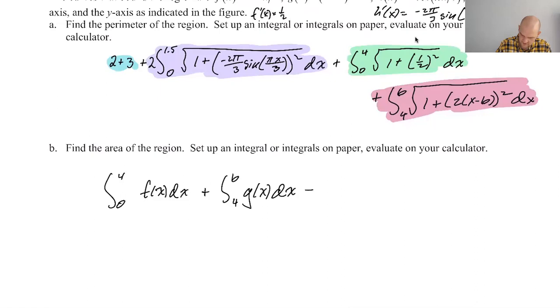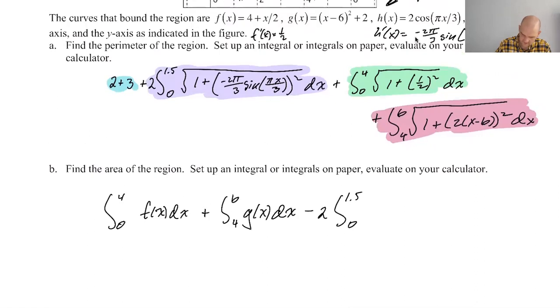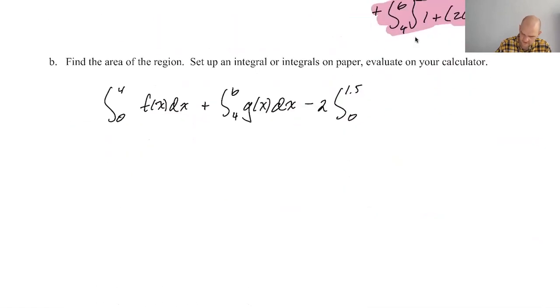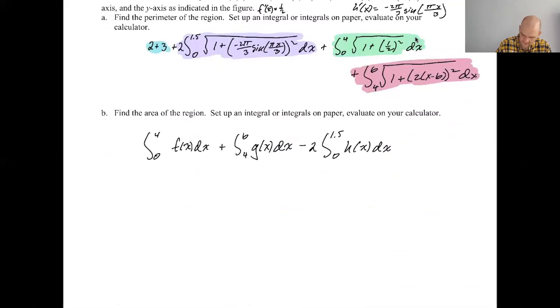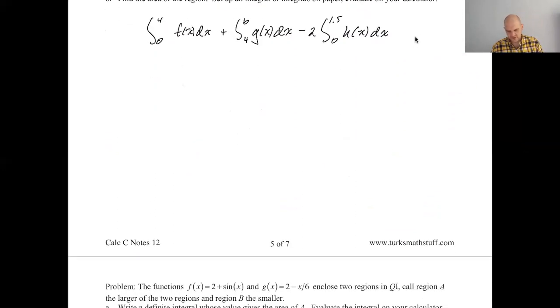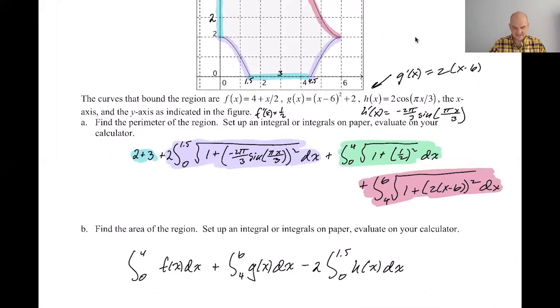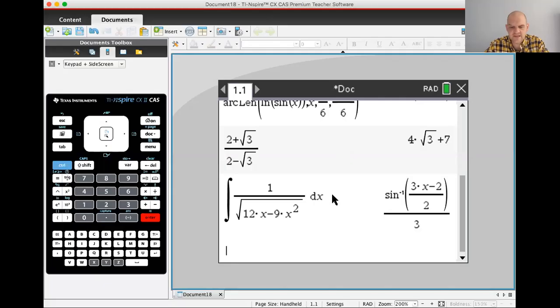And then I'm going to subtract two times the integral from zero to 1.5 of probably H of X. Yes. So zero to 1.5 and then two of them, H of X DX. All right. I don't know why I gave you so much room. That is definitely what we needed to do. All right. Back to the calculator and let's find some answers here.